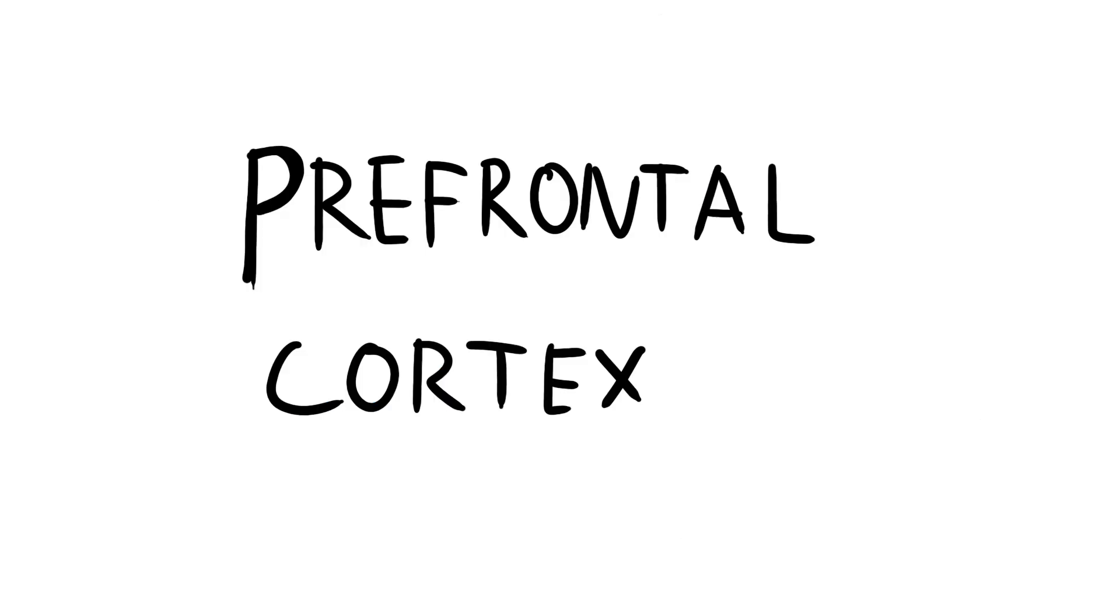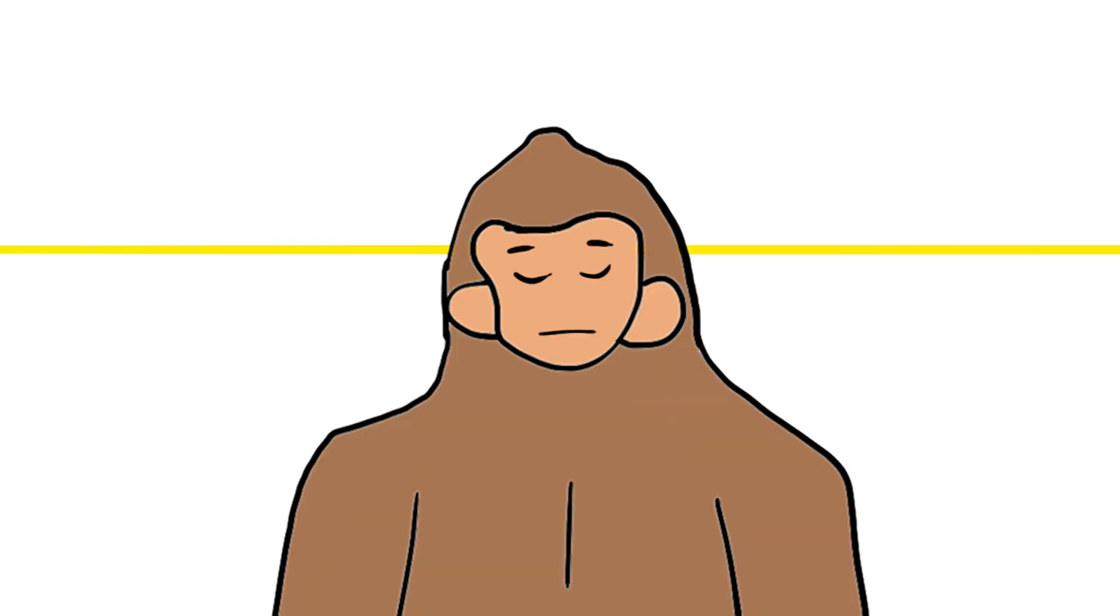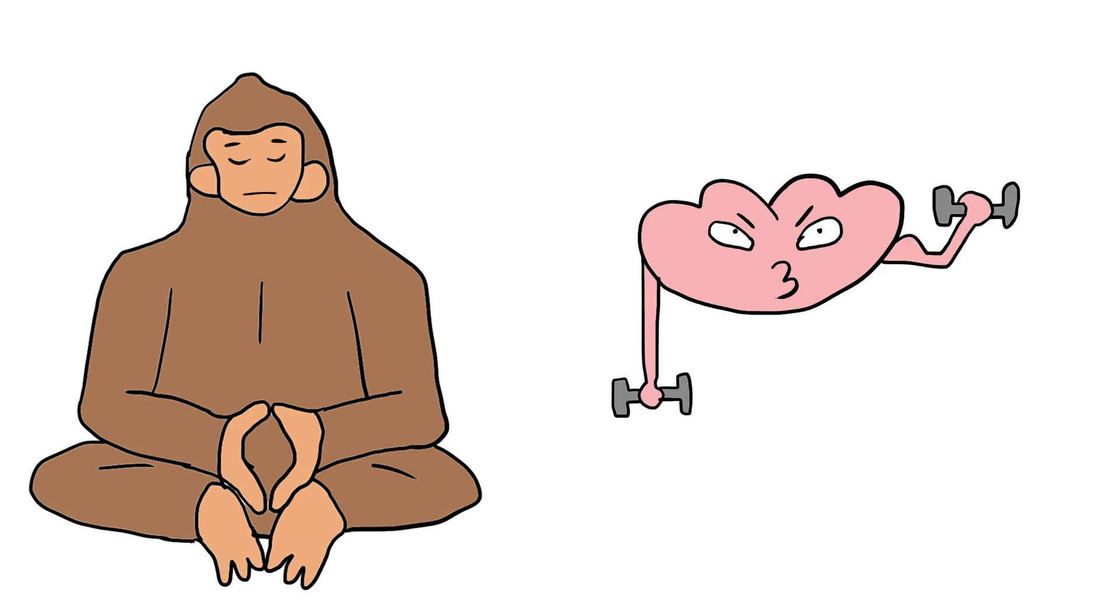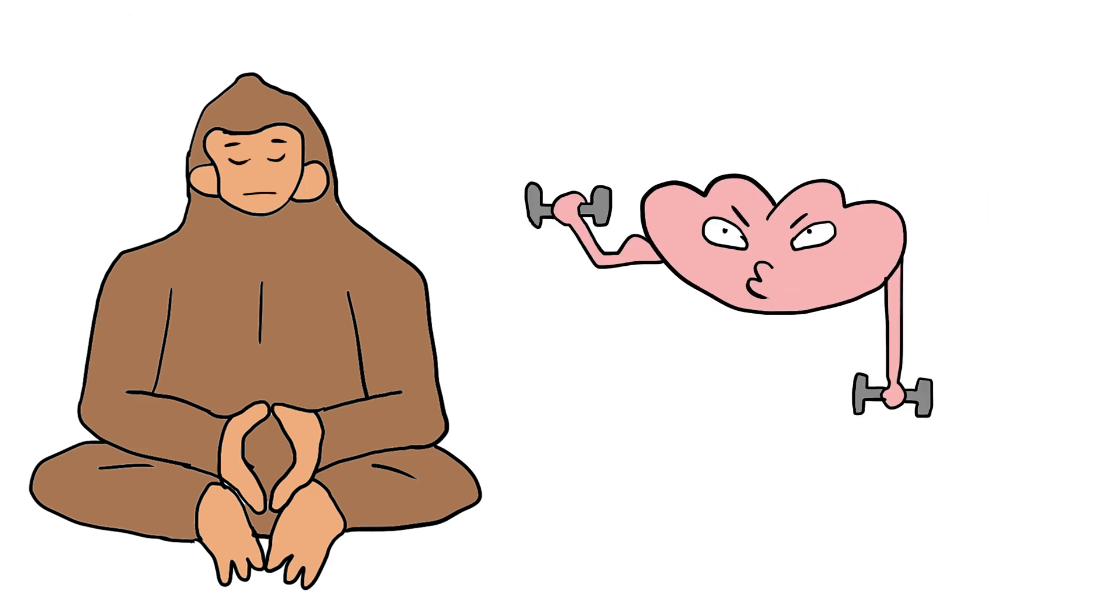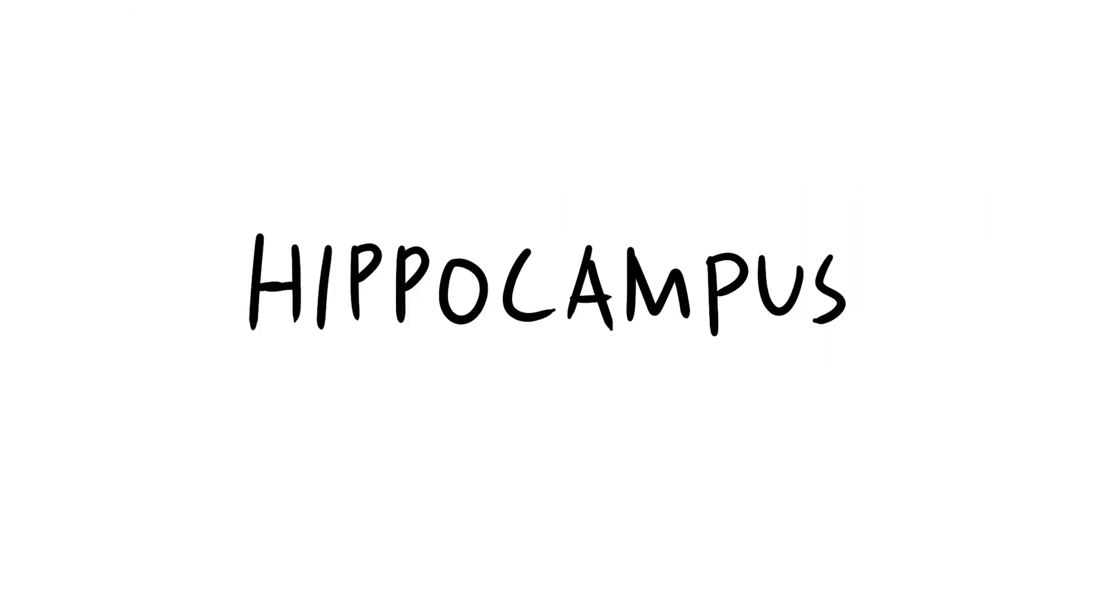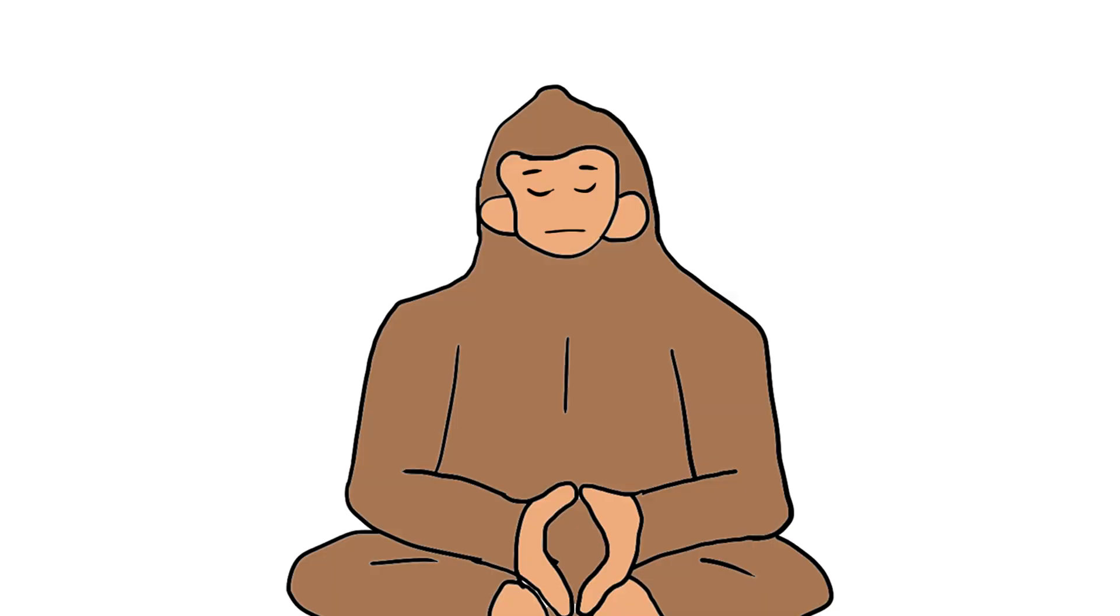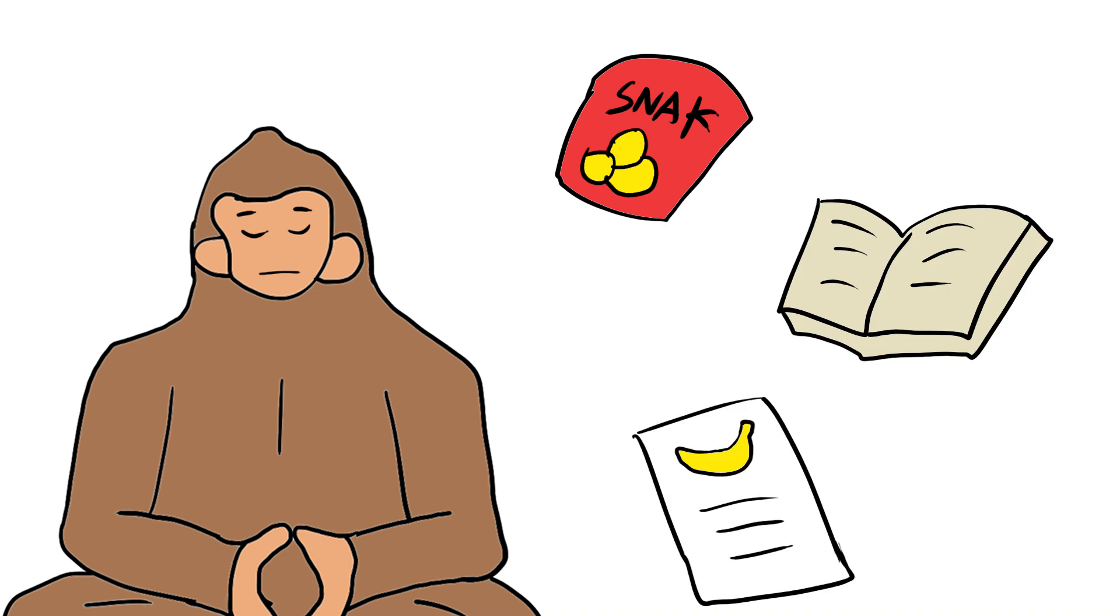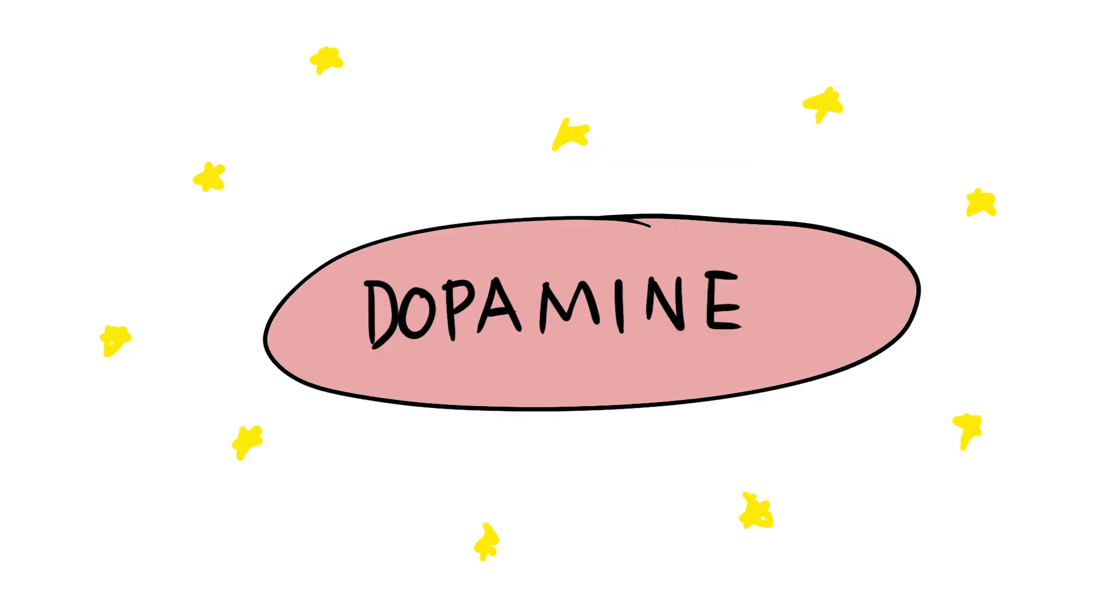The prefrontal cortex, the part that helps monkey focus, plan, and not throw things when angry, gets stronger. Meditation is like lifting mental weights. Every time monkey notices a thought and returns to his breath, it's another rep for his focus muscles. Then comes the hippocampus, the memory and learning center. Meditation thickens it. Monkey starts remembering where he hid his snacks.